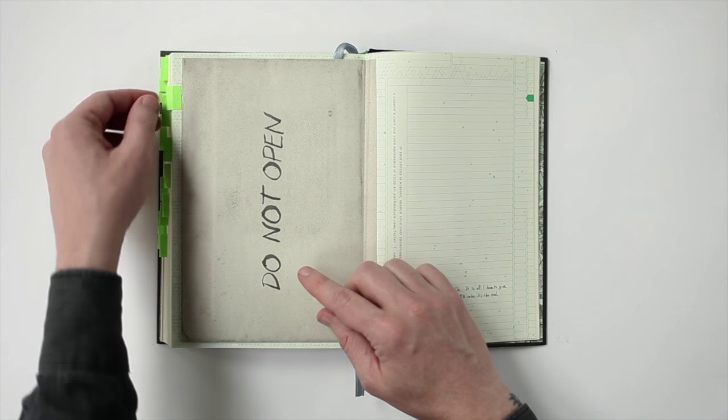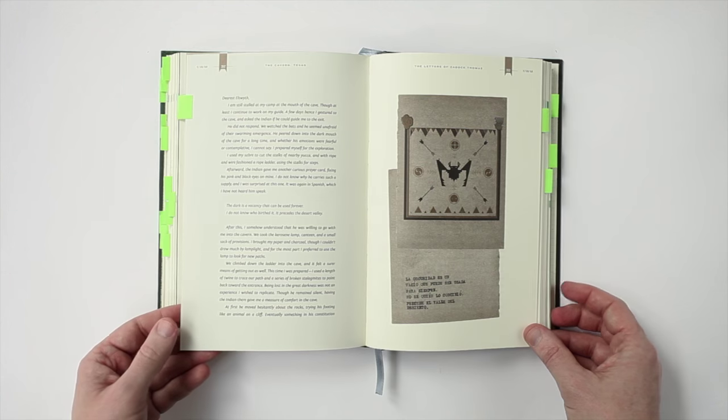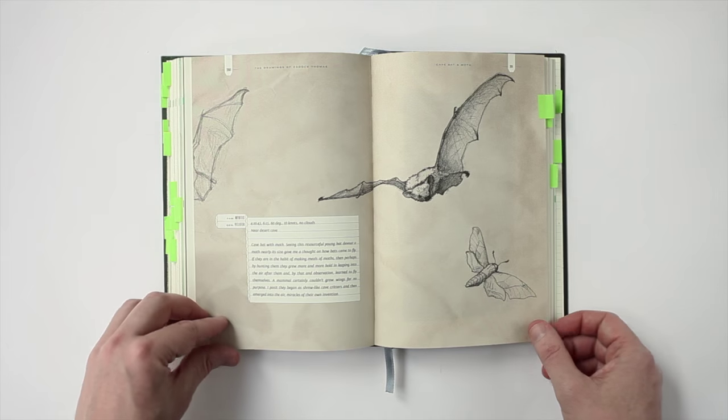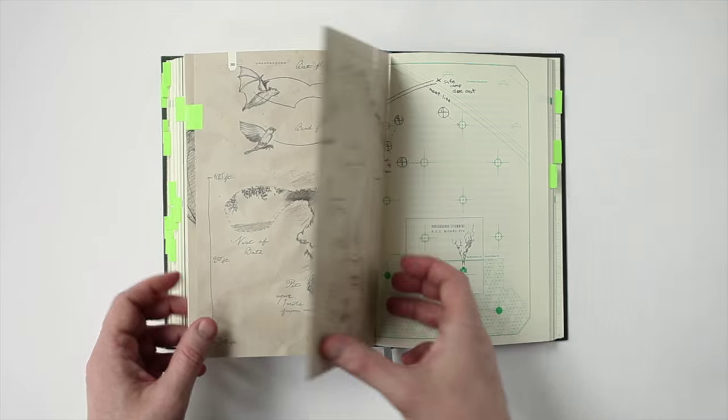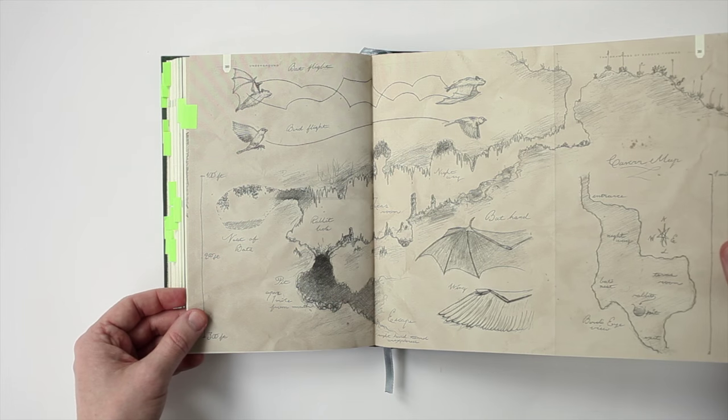Here's the letter, but you're not allowed to open it yet. So Zadok sets out for the Southwest, drawing bats along the way. His obsession with these strange creatures leads him deep underground, where he stumbles upon something impossible.